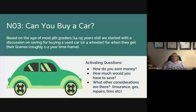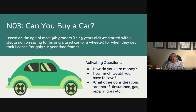We started with some activating questions like: how do you earn money? How much would you have to save? What other considerations are there — insurance, gas, repairs, tires? In this discussion we also talked about how parents would help or wouldn't help depending on everybody's situation, and what kind of considerations they would have to take into account. If their parents are buying them a car, would they have to pay insurance, gas, or repairs? What kind of financial situation does that put them in?